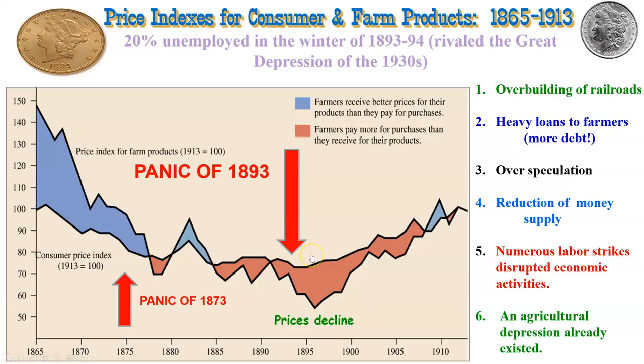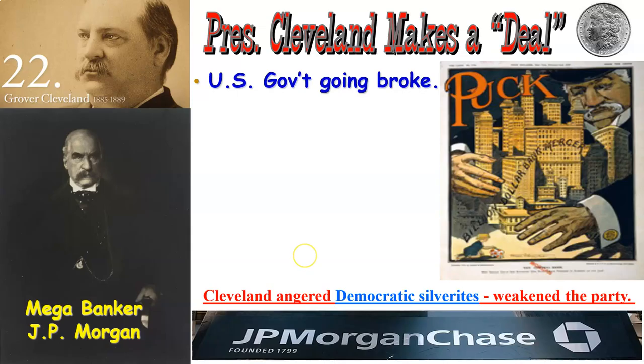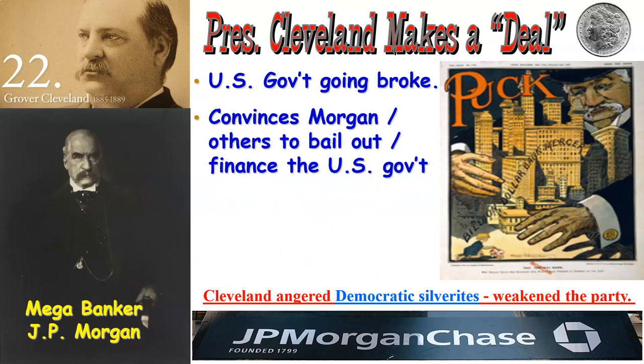Poor farm prices and poor consumer prices characterized this period. It was considered a war on wealth or a war between the classes. A picture depicts a bank being rushed by people trying to get their money out before it closed. The United States government itself was running out of money and going broke — unable to pay its workers and its army. Grover Cleveland cut a deal with mega-banker J.P. Morgan, who would finance and bail out the United States government at a very nice rate for Morgan.